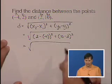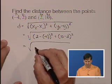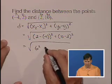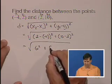Simplifying, 2 minus negative 4, the minuses become positive, and we get 6 squared plus 10 minus 2 becomes 8 squared.